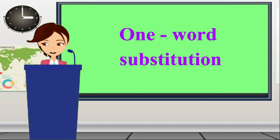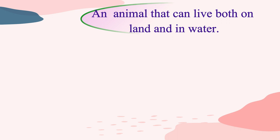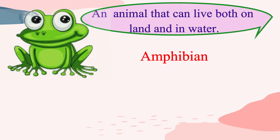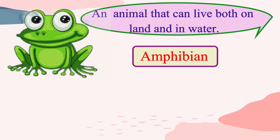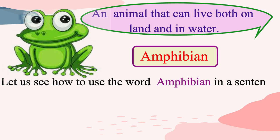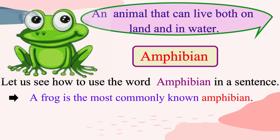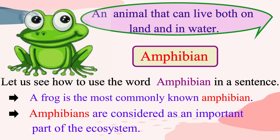Let us see the first group of words. An animal that can live both on land and in water is called amphibian. We can use the word amphibian as a substitute to replace this group of words. Amphibians are animals that are characterized by their ability to survive both in water and on land. Amphibians are considered as an important part of the ecosystem.